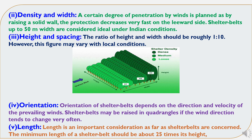The fourth characteristic is orientation. Orientation of shelter belts depends on the direction and velocity of prevailing winds. Shelter belts may be raised in quadrangles if the wind direction tends to change very often. The fifth characteristic is length, which is an important consideration. The minimum length of a shelter belt should be about 25 times its height.